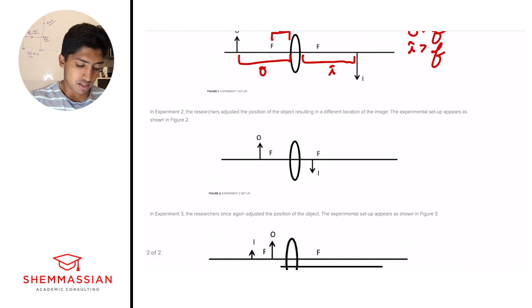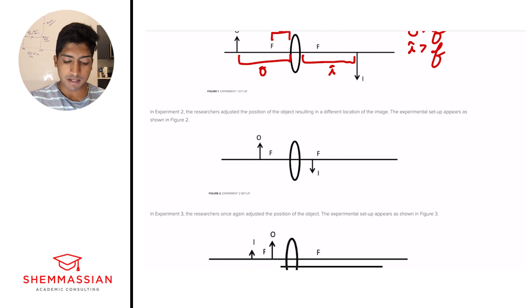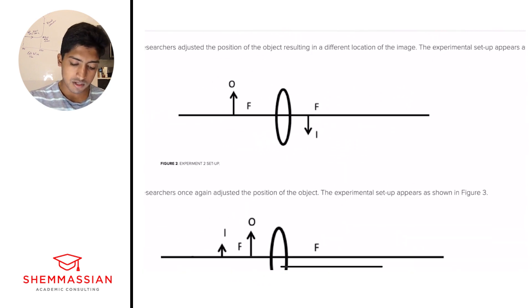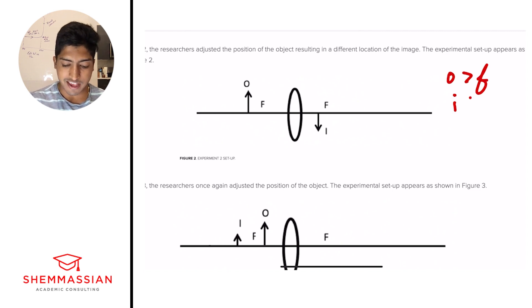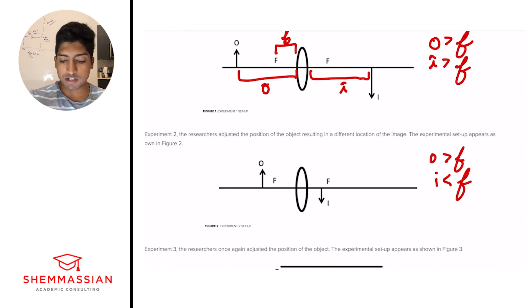In experiment two, the researchers adjusted the position of the object, resulting in a different location of the image. The experimental setup appears as shown in figure two. This is a similar setup to figure one. What changes is that our object distance is greater than F, but our image distance is less than F. So we have a bunch of information to work with, comparing the same parameters from figure one to figure two.